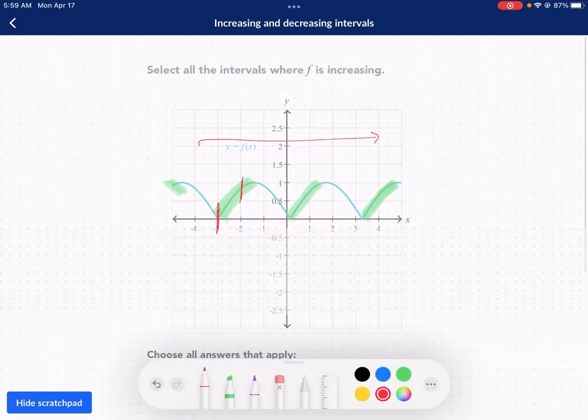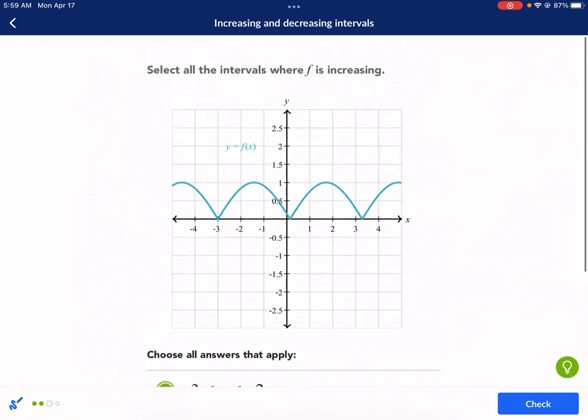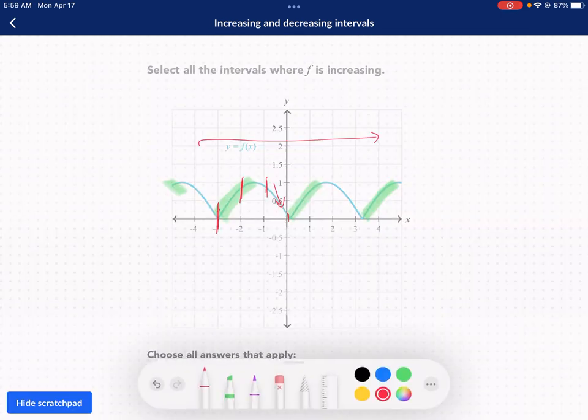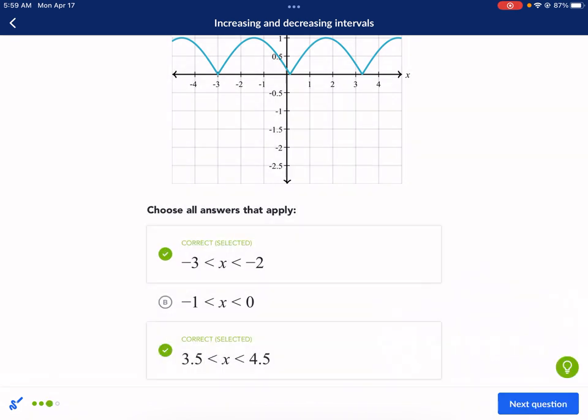Between negative 1 and 0, negative 1 is here, 0 is here. That is decreasing. It's going down. That's not a choice. 3.5 to 4.5. So 3.5 is about here. 4.5 is about there. That's another increasing spot. So we're going to select that one and we're going to move on to our last question.